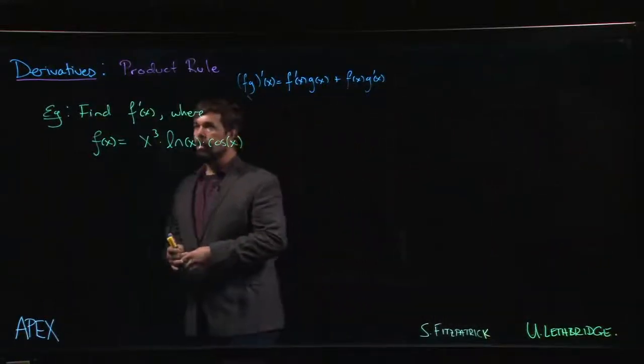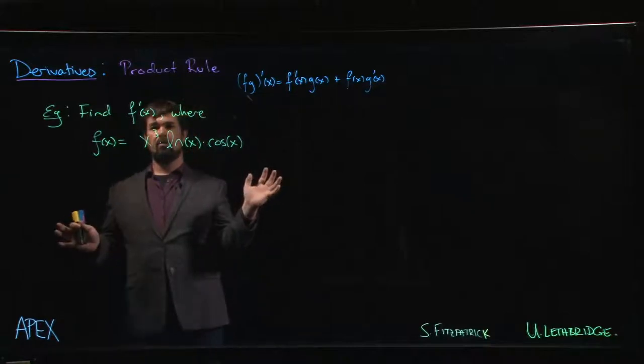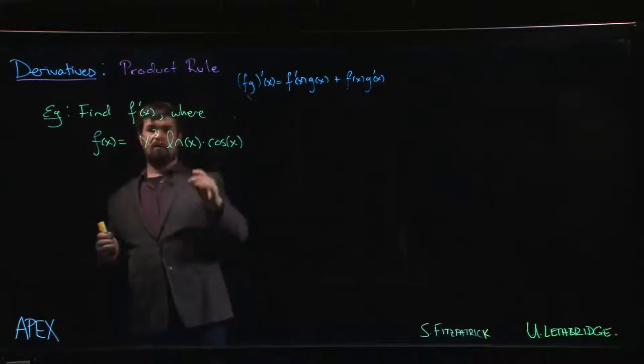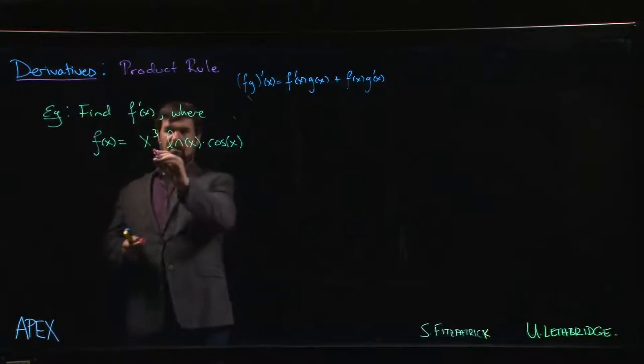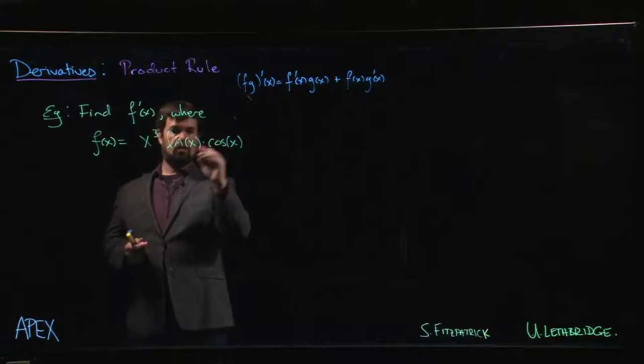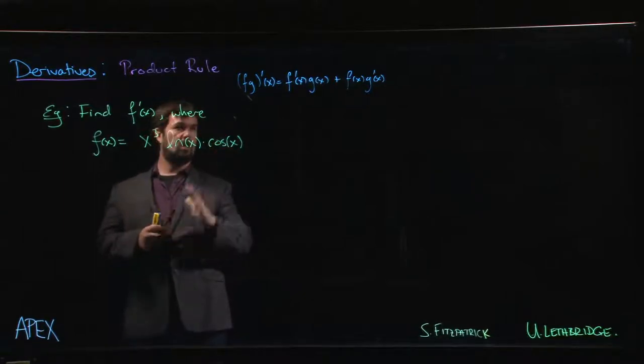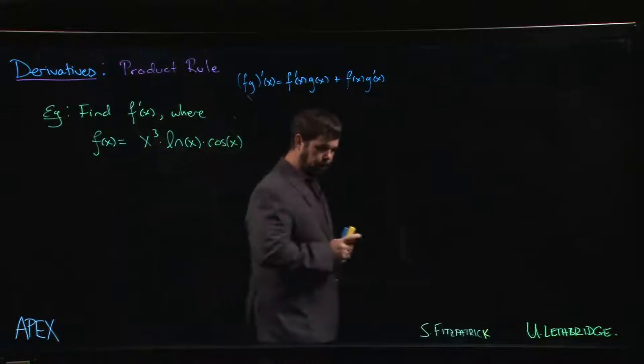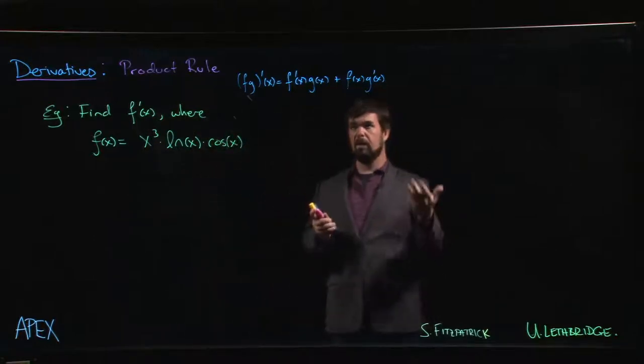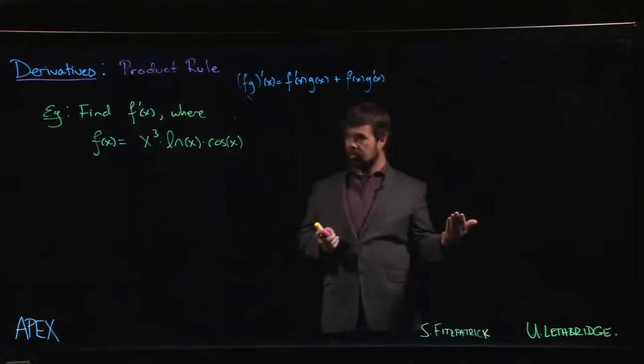Let's look at another example. We're going to use the product rule to find the derivative of this function, which is a product. But you'll notice that in this case we actually have a product of one, two, three things, and the product rule only tells us how to deal with the derivative of two things. The reason why we only need to bother stating it for a product of two items is...